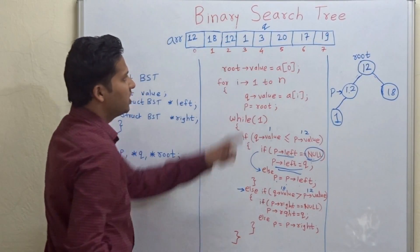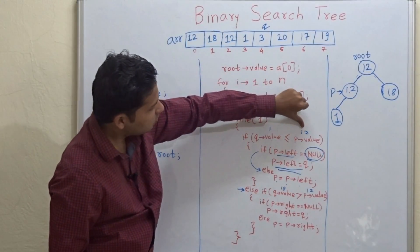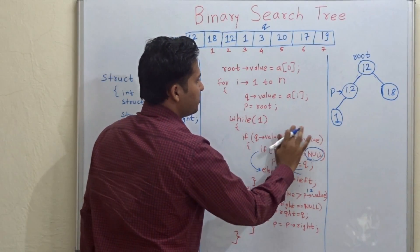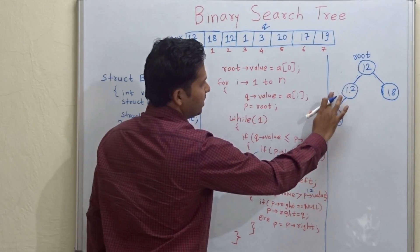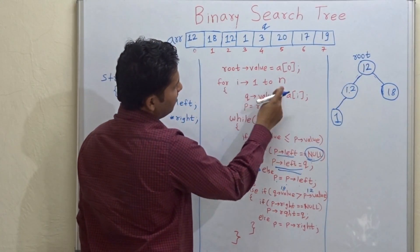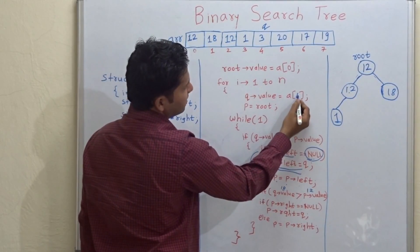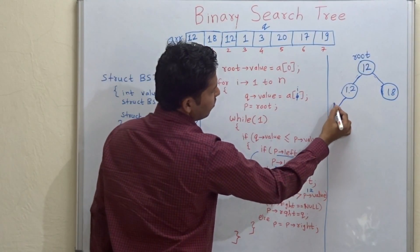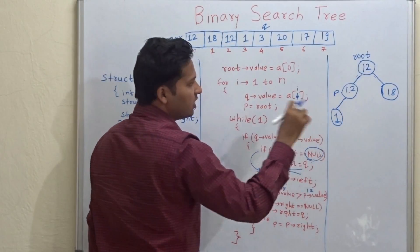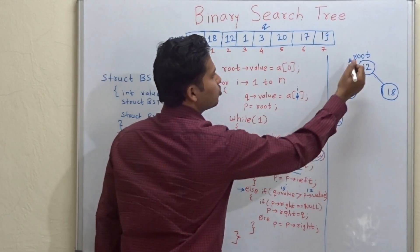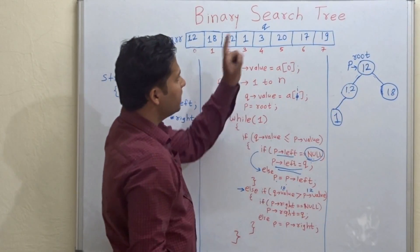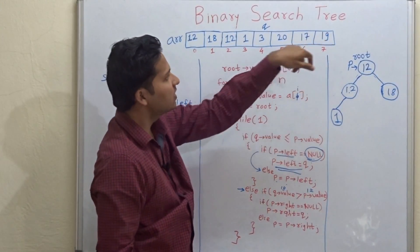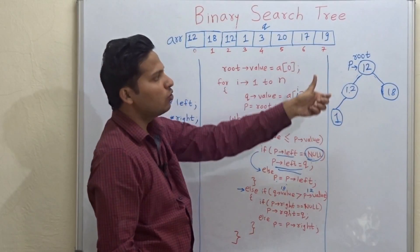Then moving to 3. Check whether 3 is less than or equal to 12. One important point: at every new for-loop iteration, p goes back to the root. So for each element we check from the root. For a[4] = 3: 3 is less than 12, so check whether the left of 12 is null — no. So move p to the left child.